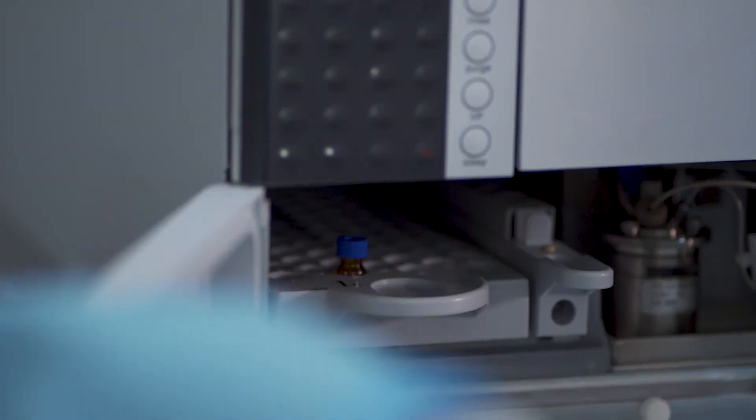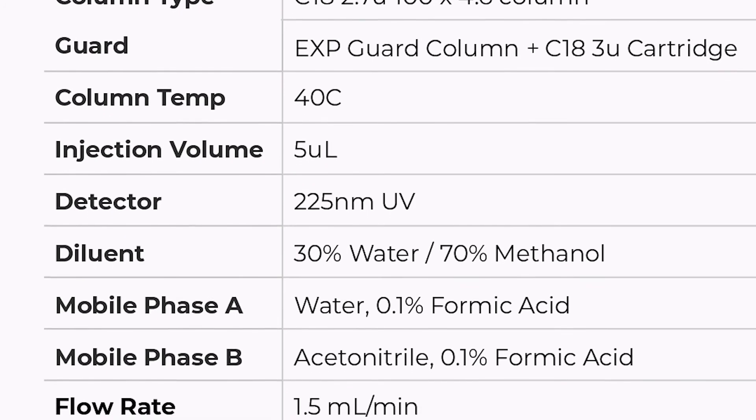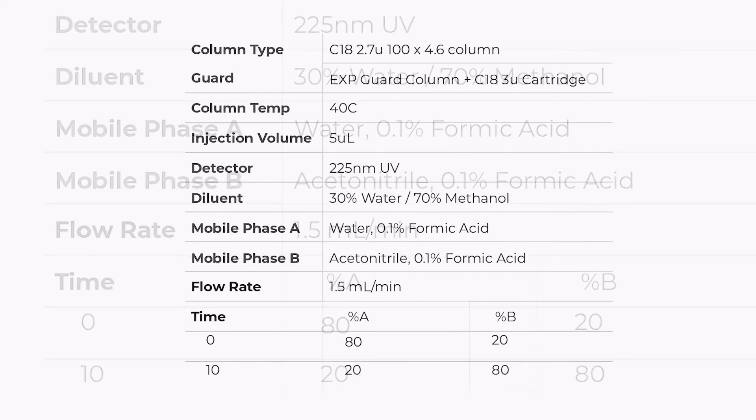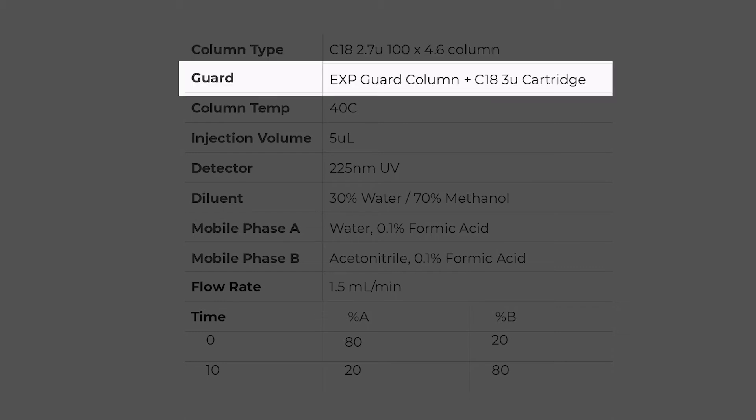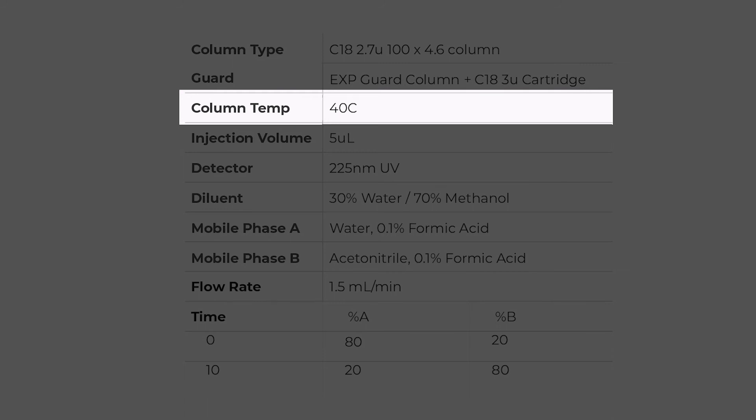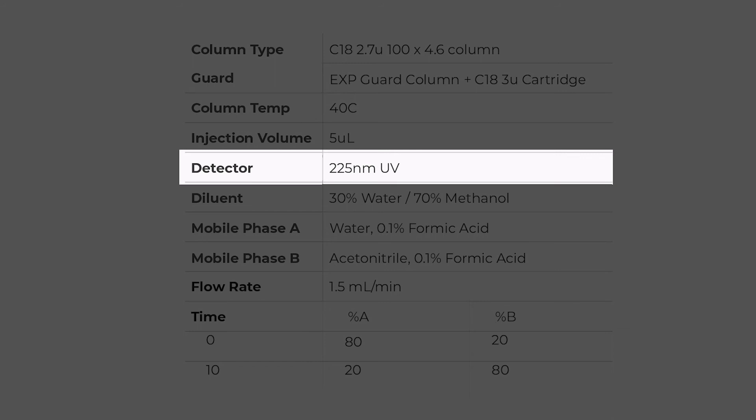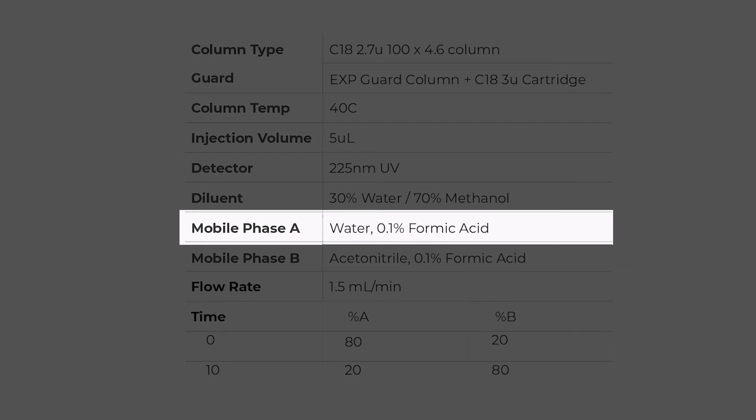When you're doing potency, you typically want to use a C18 column. We like the solid core type columns because they offer more efficiency in a shorter column length as compared to fully porous columns. We're using a C18 2.7 micron, 100 by 4.6, and we do recommend using a guard column. The column oven temp is 40 degrees Celsius. Injection volume is 5 microliters. We set the detector at 225 nanometers, and the sample is diluted in 30% water and about 70% methanol.